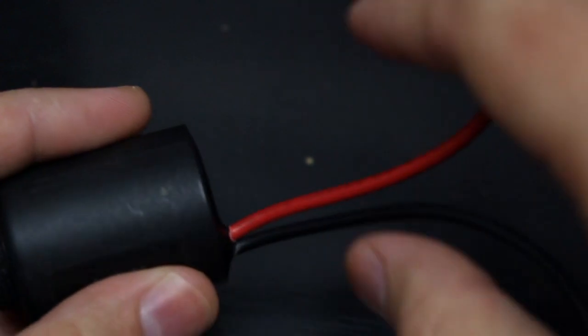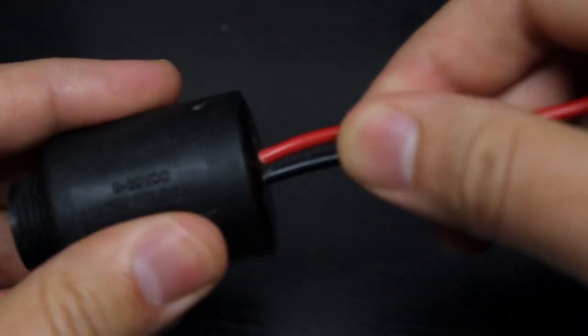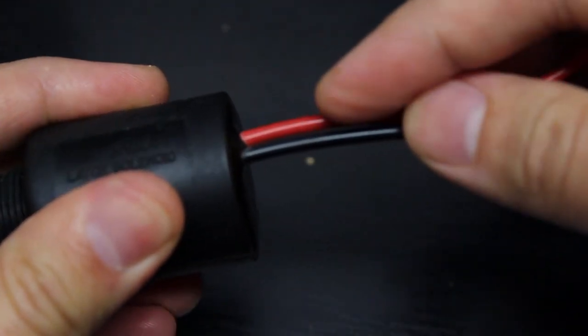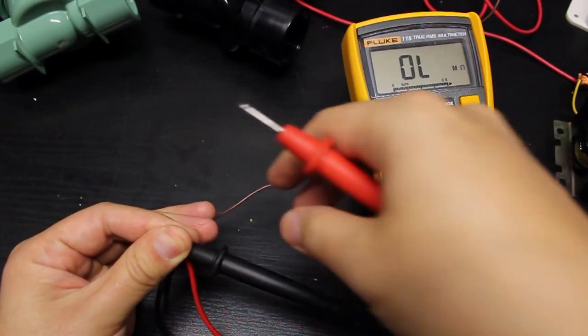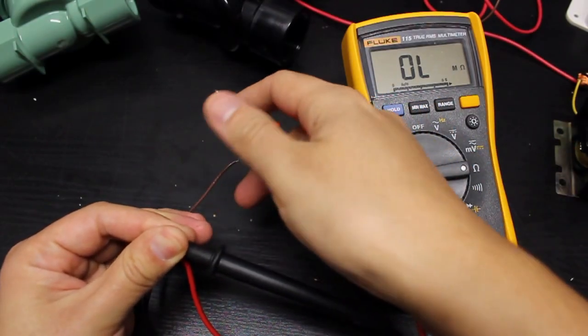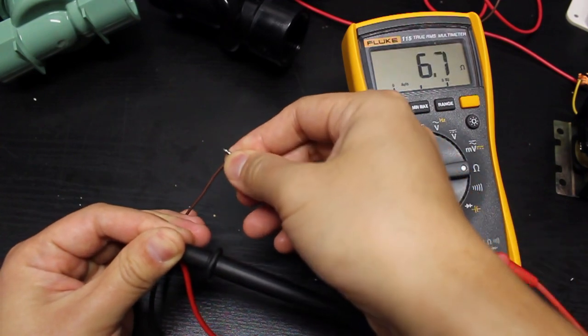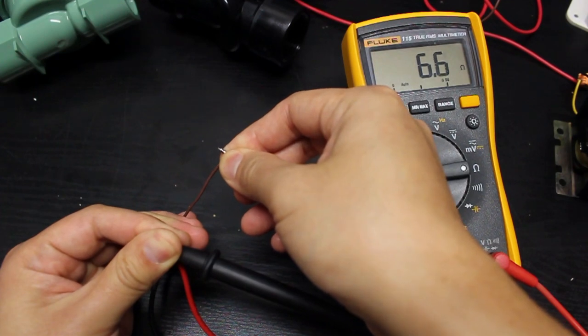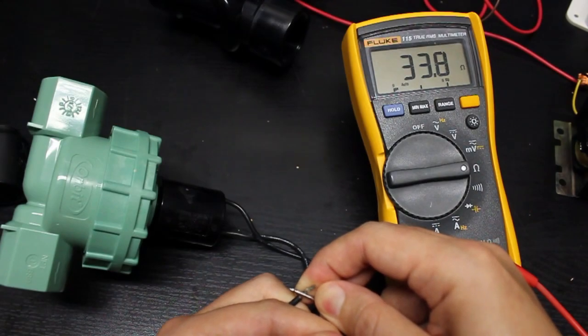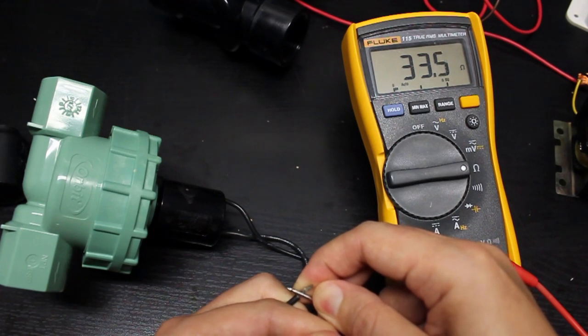These valves also often come with polarized wires of different colors like one red and one black. Finally you can use a multimeter to measure the resistance on the two wires of the solenoid. Latching solenoids usually have very low resistance, well below 10 ohm. In contrast, non-latching solenoid valves typically have a resistance above 20 ohm.